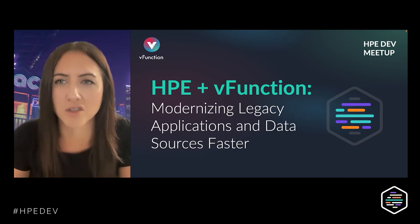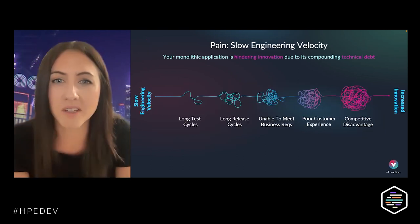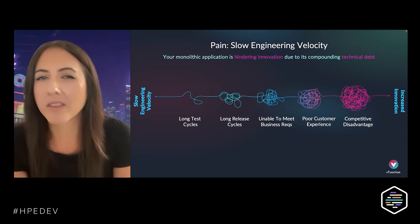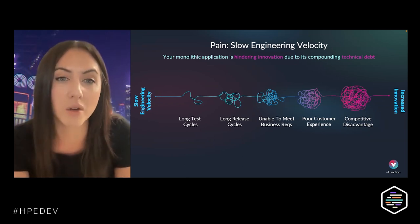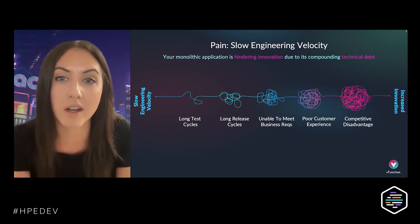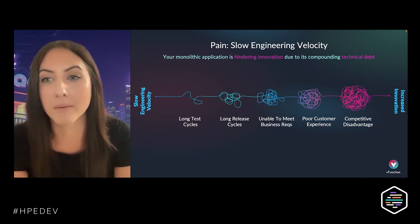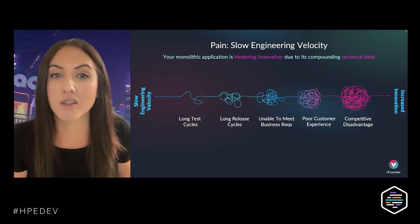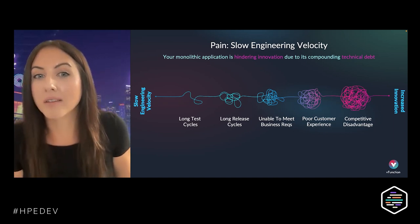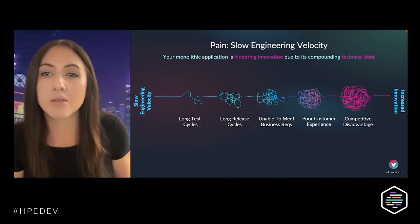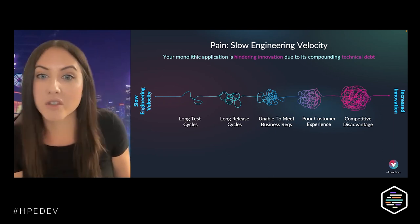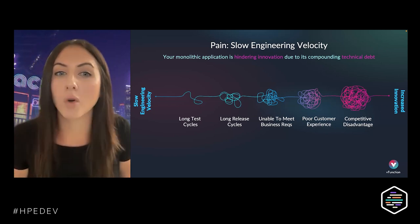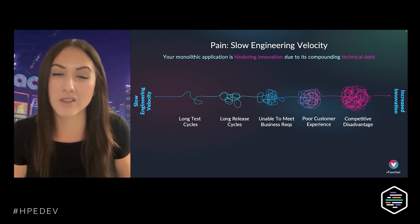I want to talk about some of the big industry and developer challenges related to modernizing legacy. The first one is engineering velocity. You have monolithic applications — they're legacy, they're getting bigger, technical debt is growing. The path from monolithic apps to innovation is not an easy one. You experience long test cycles, long release cycles, inability to meet business requirements, poor customer experience — all leading to competitive disadvantage. For every dollar spent, only a fraction is going to innovation; the rest is being spent on technical debt.